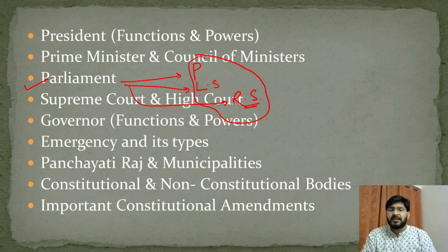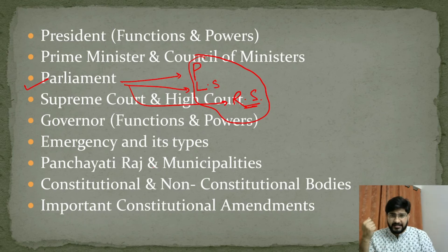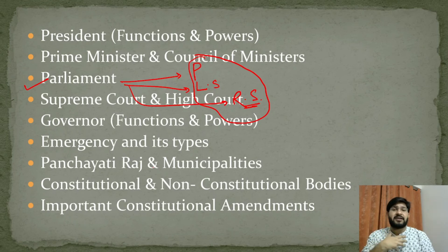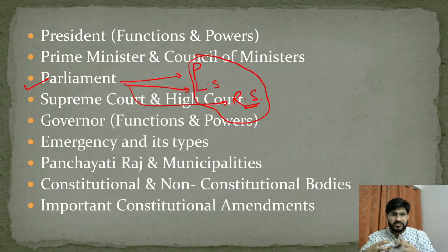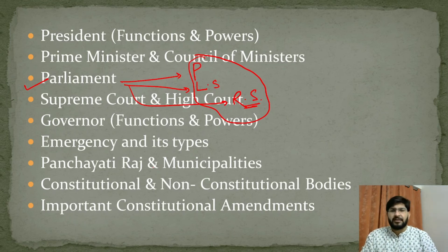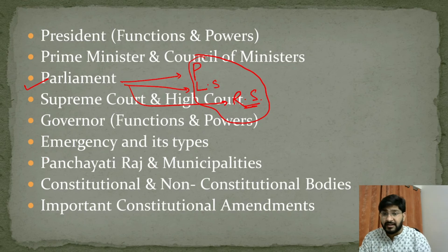The next topic is Emergency and its types. There is National Emergency under Article 352, State Emergency (President's Rule) under Article 356, and Financial Emergency under Article 360. We study how these emergencies are enforced, how Parliament functions during them, and how they are revoked.